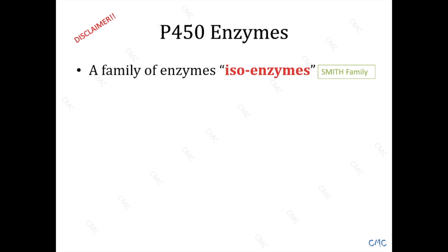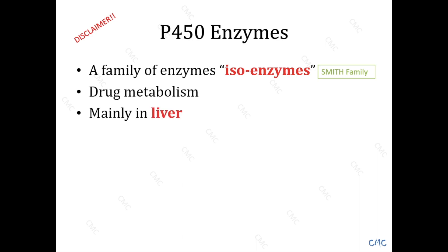This Smith family is a hardworking bunch. They're mainly produced by the liver. There are some other organs that may produce a little bit, like the gut, but for the sake of simplicity, they're mainly produced by the liver. And they help do one of the core functions of the liver, which is drug metabolism.